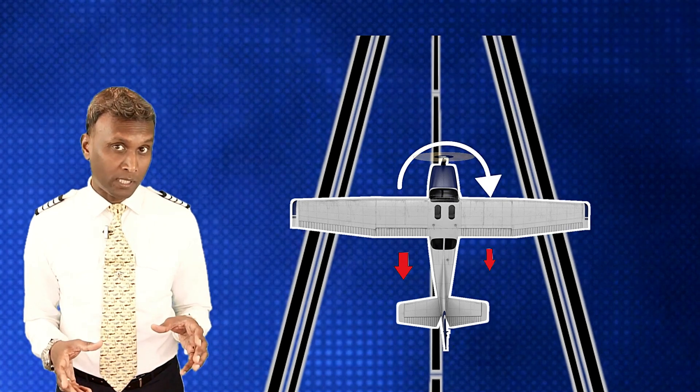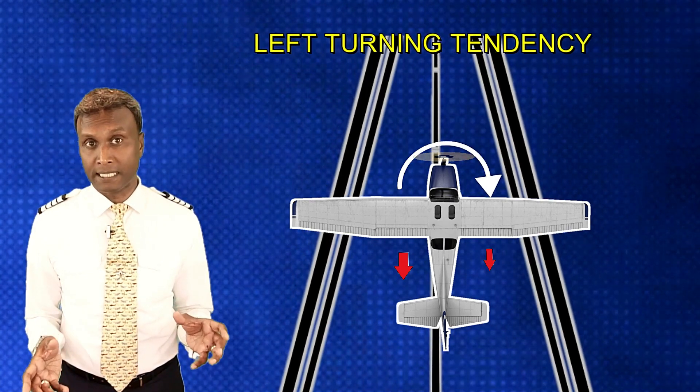The landing gear on the left side experiences added pressure and drag due to this roll. This additional drag slows down the left landing gear, causing it to lag behind the right landing gear, which experiences less drag. Consequently, the aircraft experiences asymmetrical drag, with more drag on the left side than the right, causing a pronounced yaw to the left. To counteract this effect and keep the aircraft aligned with the runway centerline during takeoff, pilots must apply additional right rudder input to compensate for this left-turning tendency.